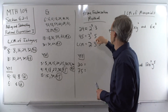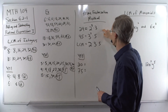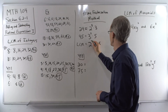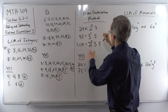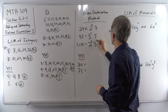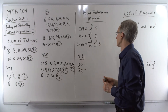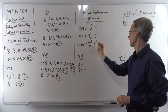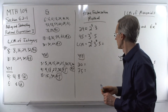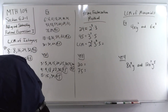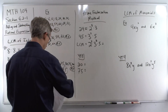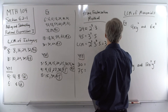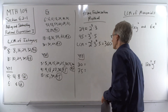Now in this list, we go through and for each base, we select the highest exponent. For 2, the biggest exponent is 3. For the 3s, the bigger exponent is 2. And for 5, we just have 1. The LCM is the product of those — we're going to multiply all of those together. And we get 360.